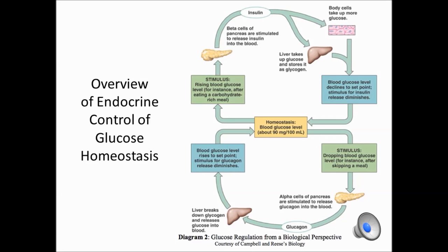When blood glucose increases after a meal is taken in, the hormone insulin is secreted from the beta cells, which are part of the islets of Langerhans. The insulin then leads to uptake of glucose into peripheral tissues, such as muscle and adipose tissue. It also leads to uptake of glucose into the liver, where the glucose can be stored as glycogen. The uptake of glucose into those tissues leads to a decrease of glucose and a normalization of the glucose concentration.